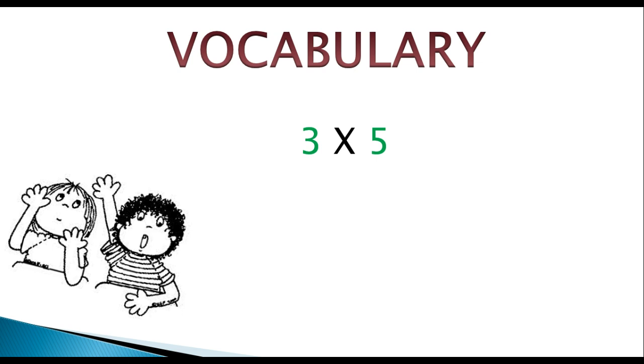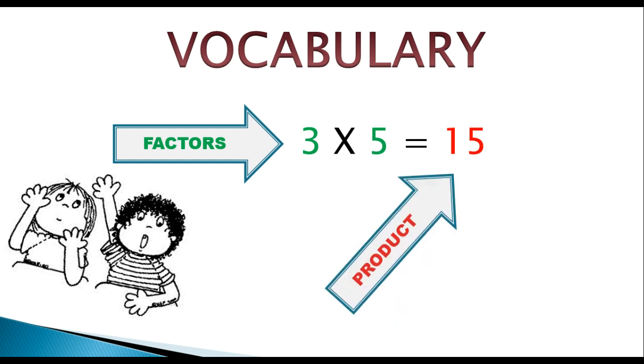Now we see this problem right here, 3 times 5. The number 3 and the number 5, the ones that are in green, are called factors. That's right, they are called factors. They are the numbers that we are going to be multiplying. When you multiply them, they give you a product, this answer right here. The answer to this multiplication, which is in red, the 15, is known as the product.